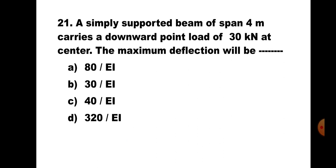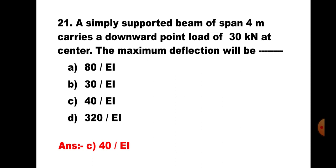Question number 21. A simply supported beam of span 4m carries a downward point load of 30kN at the centre. The maximum deflection will be: A. 80/EI, B. 30/EI, C. 40/EI, D. 320/EI. This is the same simply supported beam as in the previous question. Maximum deflection is WL³/48EI. Putting all the values, you will get the answer as 40/EI. Hence, the correct answer is C. 40/EI.